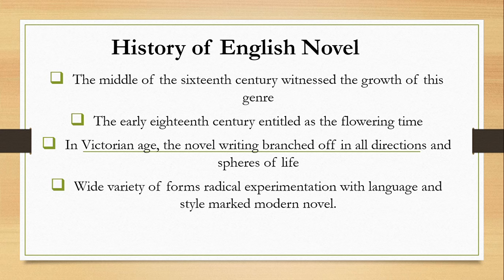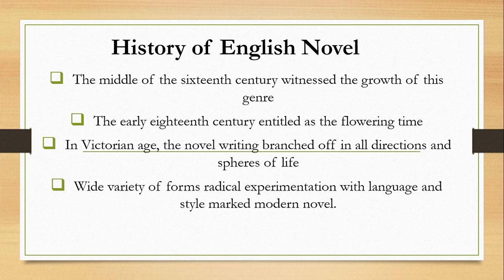Tobias Smollett, being a younger son, had little hope from his family, and his novels are an expression of his frustration and personal experience. His works include Roderick Random, Peregrine Pickle, Humphrey Clinker, and others.